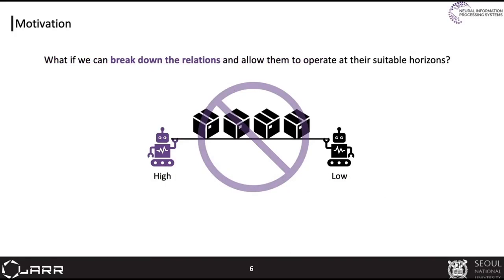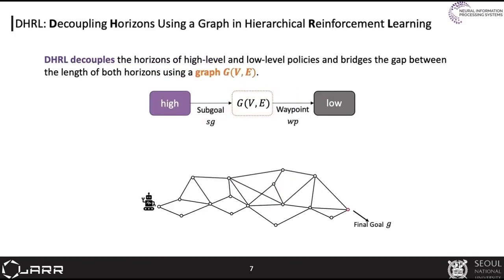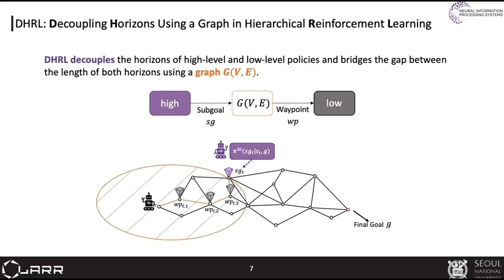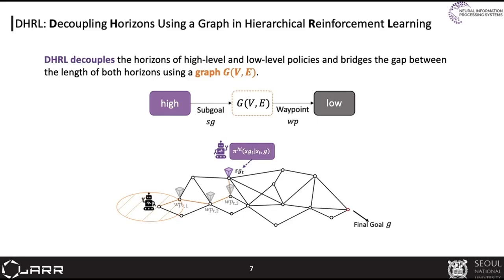What if we can break down this relation and allow both levels to operate at their optimal horizons? To do so, we propose to decouple the horizons of both levels and bridge the gap between them using a graph. If we have a well-formed graph over the state space, we can use the graph to break down the sub-goal into several waypoints and instruct the low-level policy to achieve each waypoint. Then the high-level policy can use a longer temporal abstraction while the lower level only covers a smaller range by decomposing the sub-goal into several waypoints with the graph.